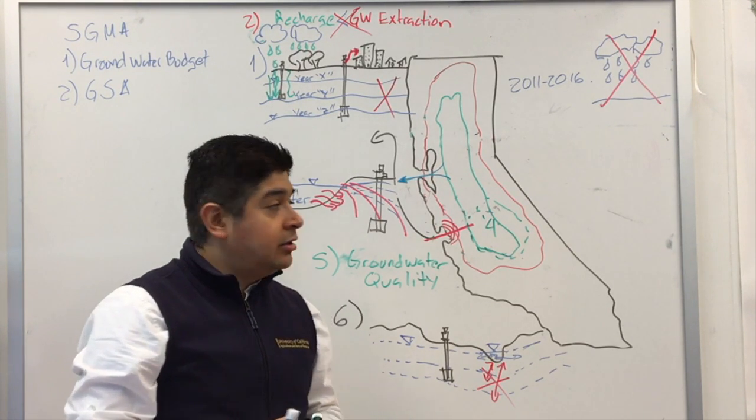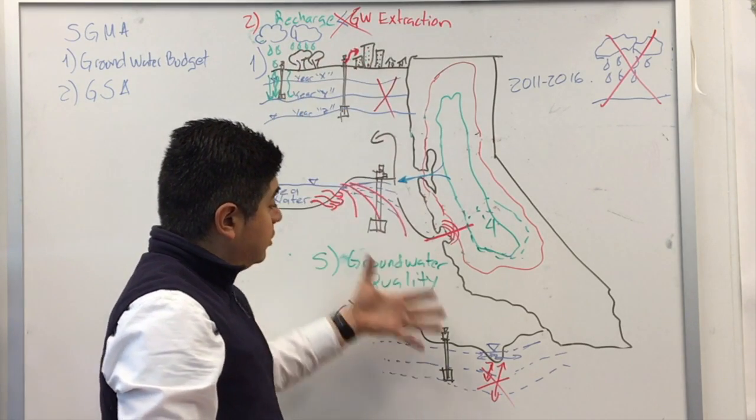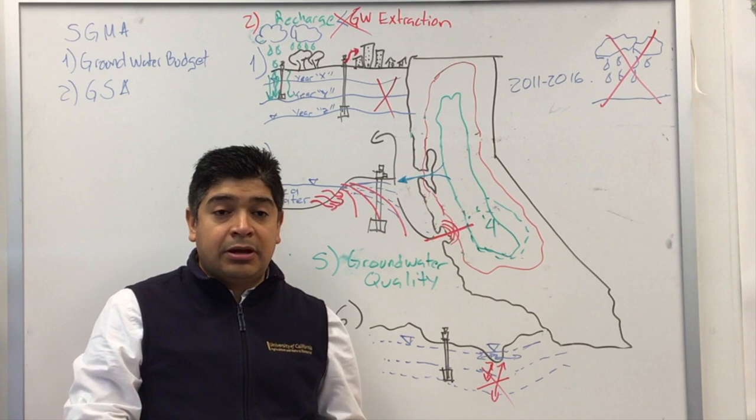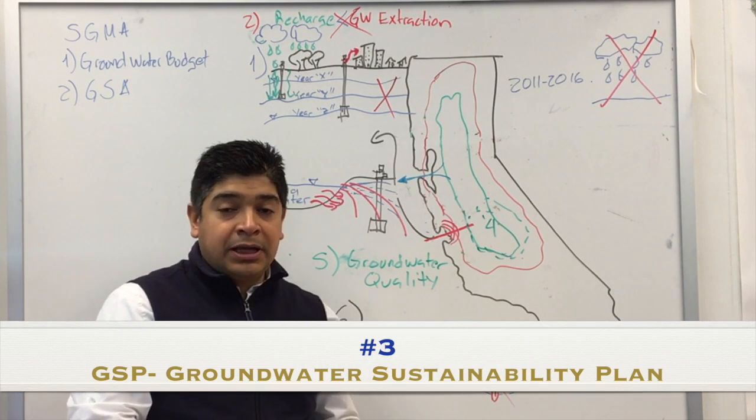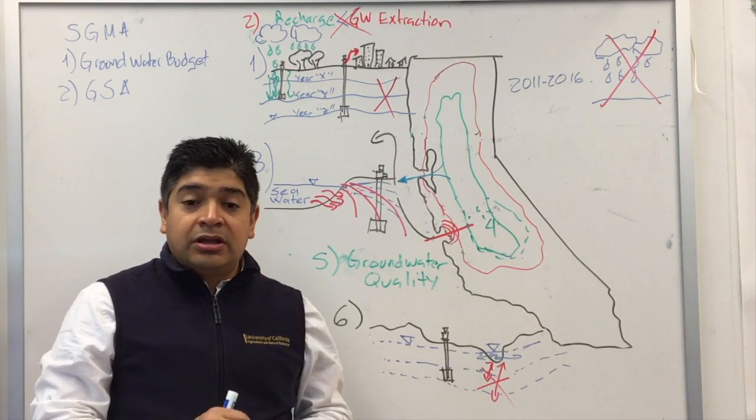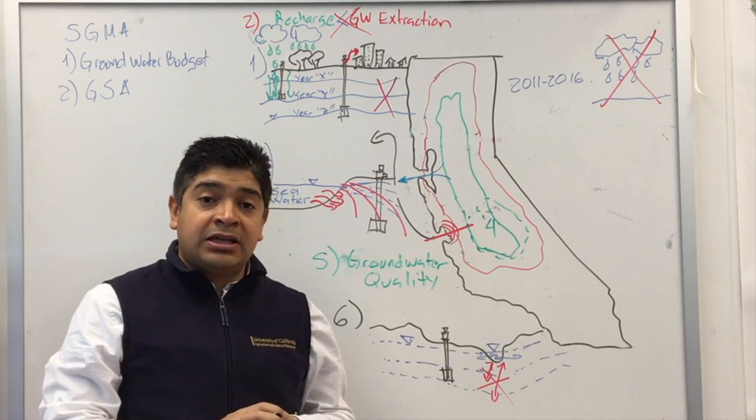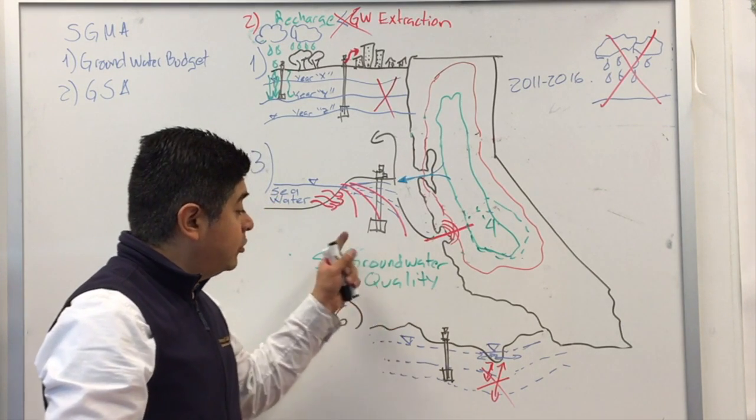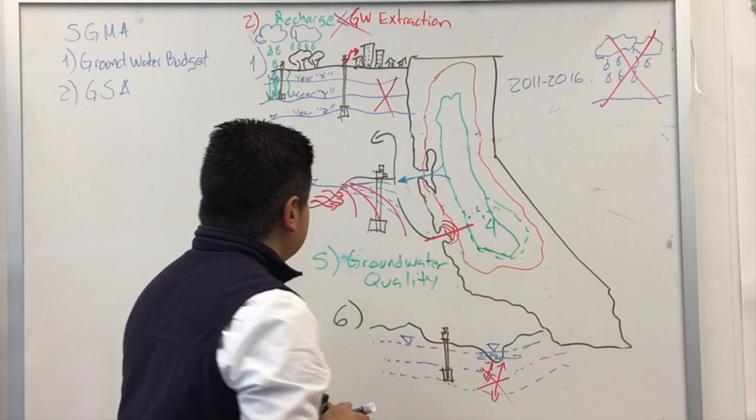Now, once this agency is created, how are they going to avoid these six undesirable results? Well, they are going to develop a plan. And by developing a plan and finding if there is any of these six undesirable results, they will try to keep track and find specific measures so they can avoid any of these six undesirable results.